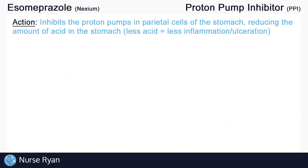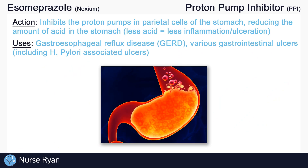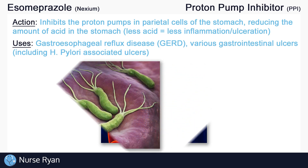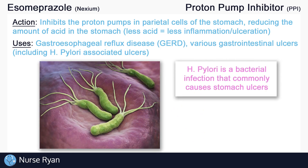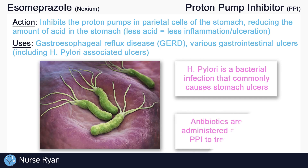So what are some of the uses for esomeprazole? Esomeprazole can be used to treat various conditions related to excess stomach acid, including gastroesophageal reflux disease, or GERD, and treatment of various gastrointestinal ulcers, including H. pylori-associated ulcers. H. pylori is a bacterial infection that commonly causes stomach ulcers. Esomeprazole won't actually treat the infection, but rather treats some of the symptoms such as ulcers or heartburn, simply by reducing stomach acid. Antibiotics are often administered alongside a proton pump inhibitor to actually treat the H. pylori infection.